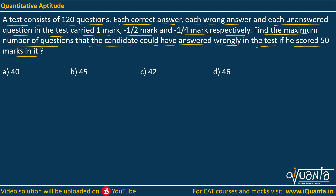There are a total of 120 questions in the test and these questions can be correct, incorrect, or unanswered. Let's assume there are C questions for which answers were correct, W questions for which answers were wrong, and U questions which were unanswered. So the total number of questions: C + W + U = 120. This will be the first equation, regarding the number of questions.